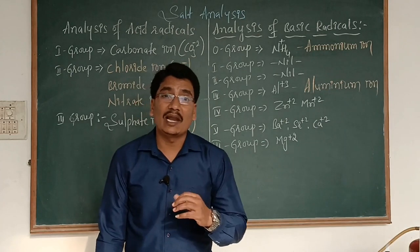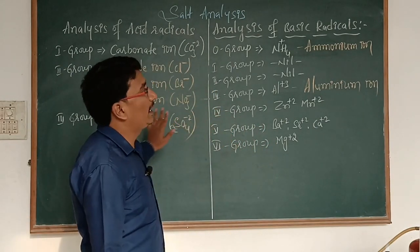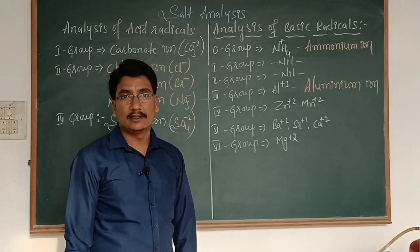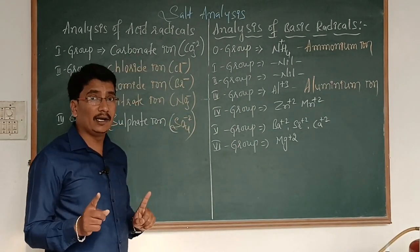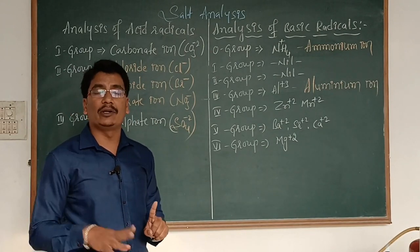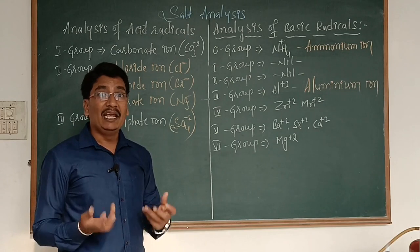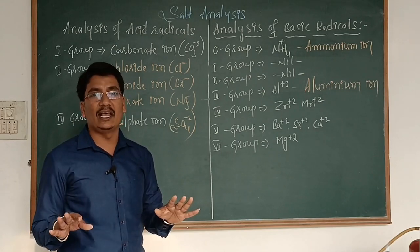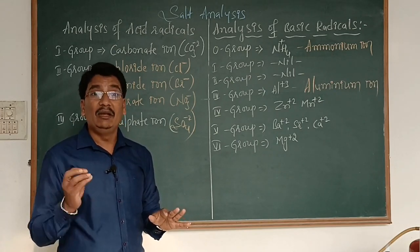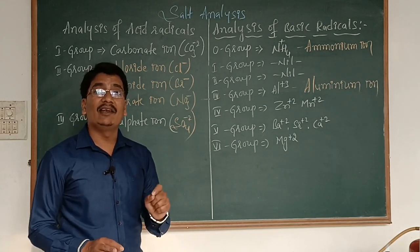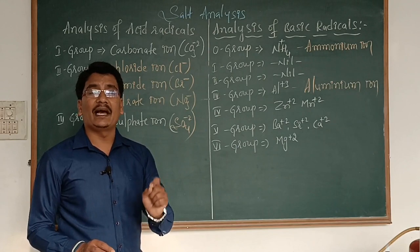Now I would like to clarify all the group tests for both acid radicals and basic radicals. Come to the first one — the carbonate ion. Keep it in mind: if we get a crystalline solid, first group acid radicals are absent. If we get an amorphous solid, then we have to conduct a test for carbonate ion.